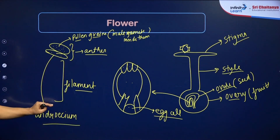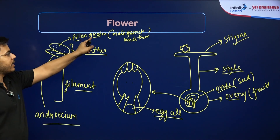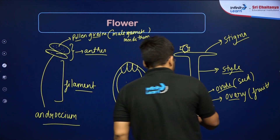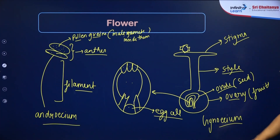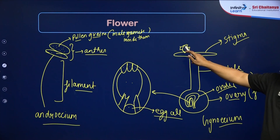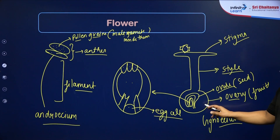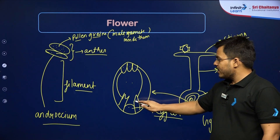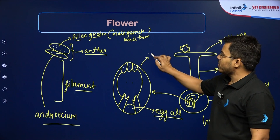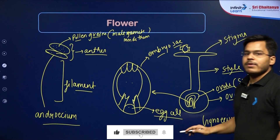Looking at the androecium in detail: the filament is the stalk-like structure that connects the anther to the flower; the anther produces pollen grains that carry the male gametes. The gynoecium has three parts: the stigma, which receives pollen grains; the style, through which male gametes move toward the ovary; and the ovary, which contains ovules. Ovules convert into seeds after fertilization and the ovary converts into fruit. The ovule contains the embryo sac — the female gametophyte — where the egg cell is present.